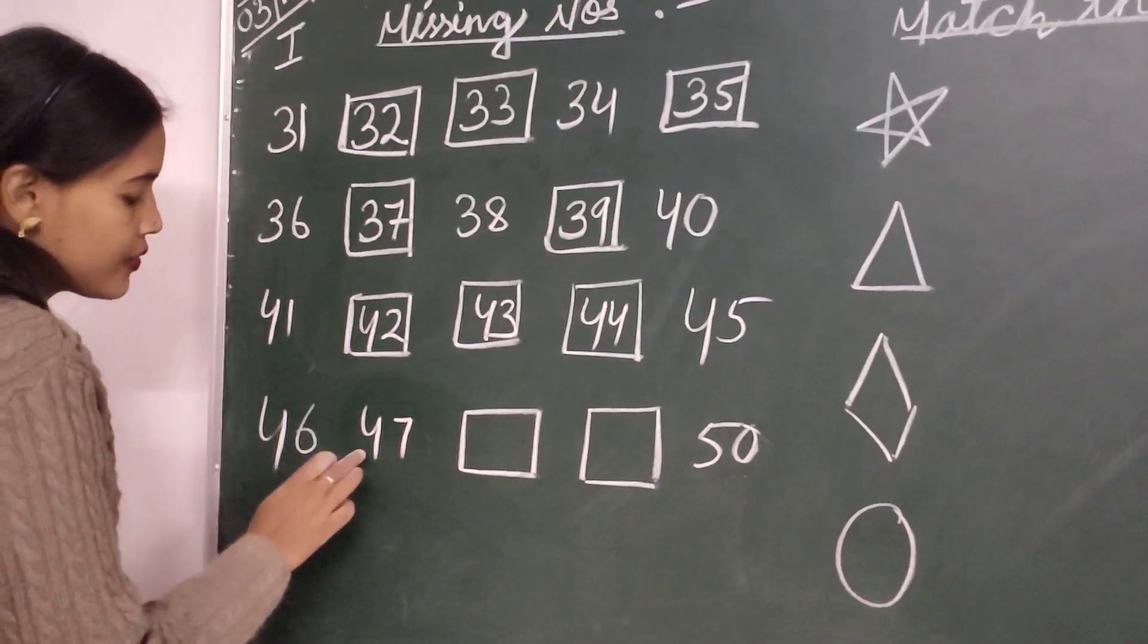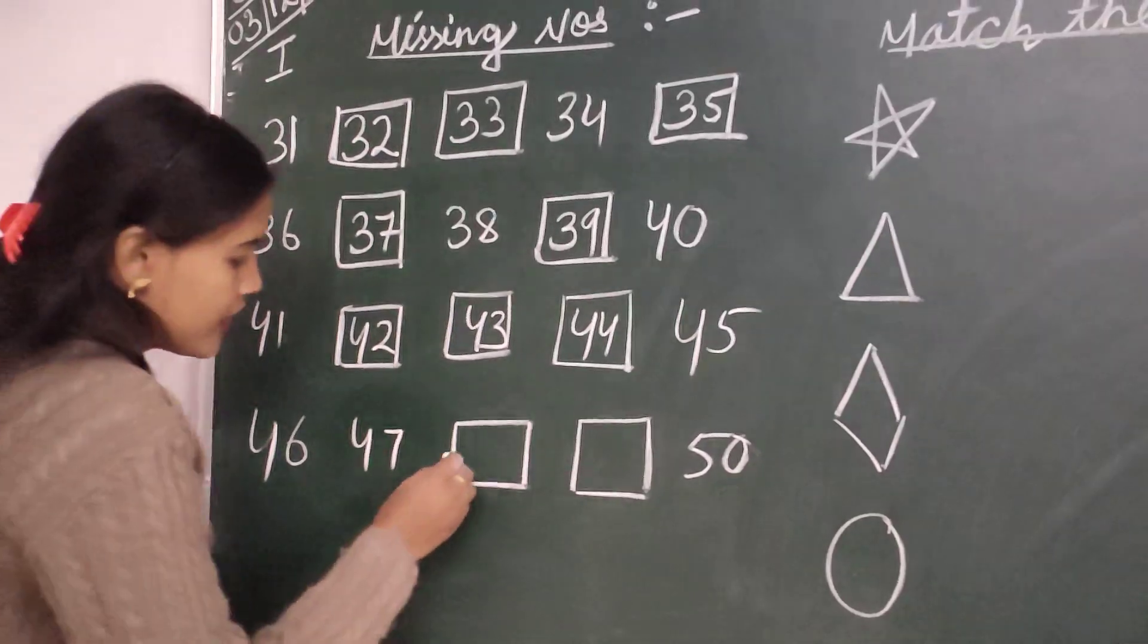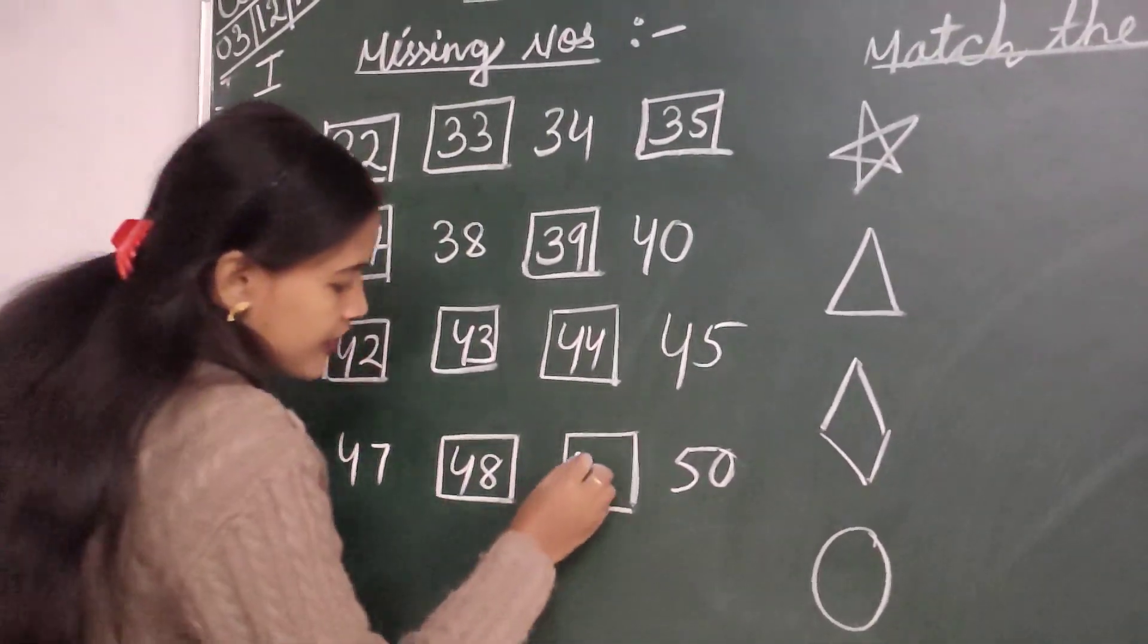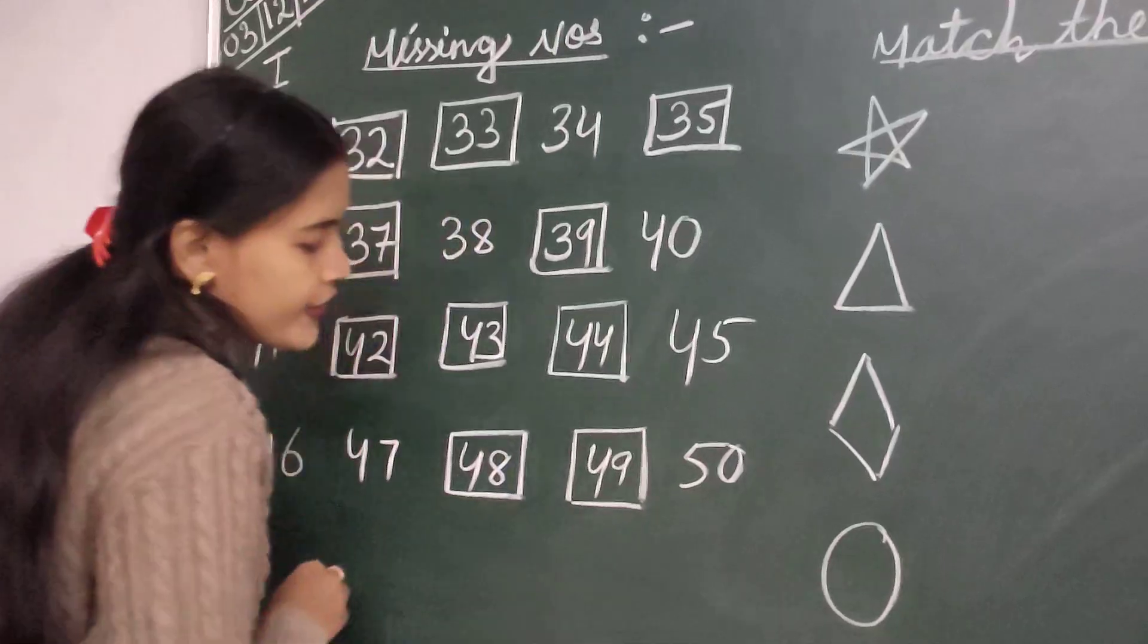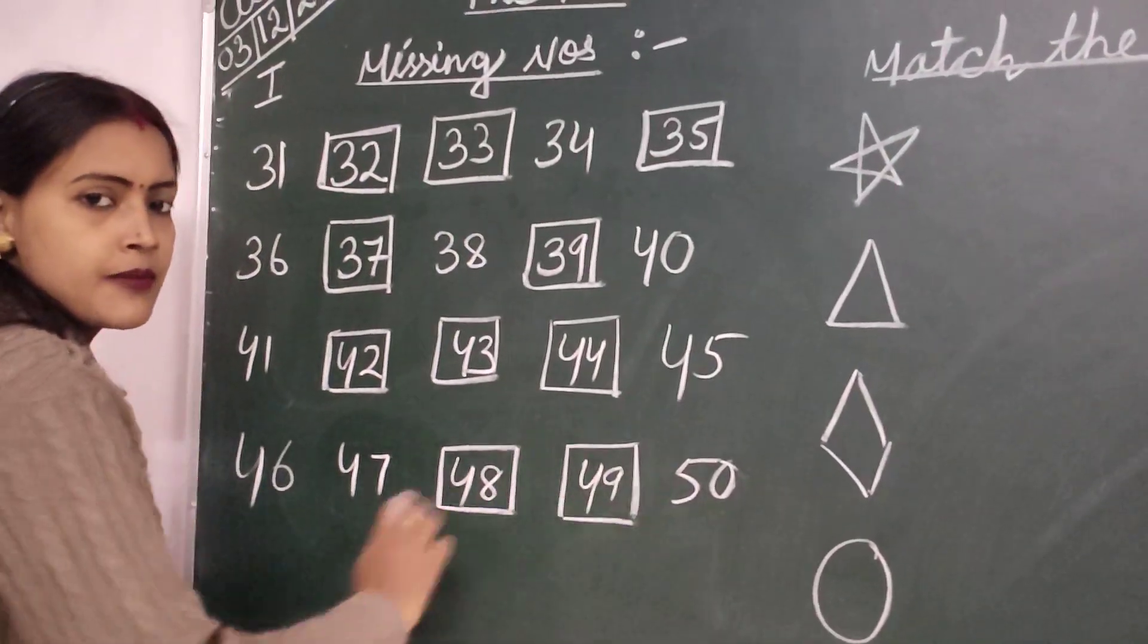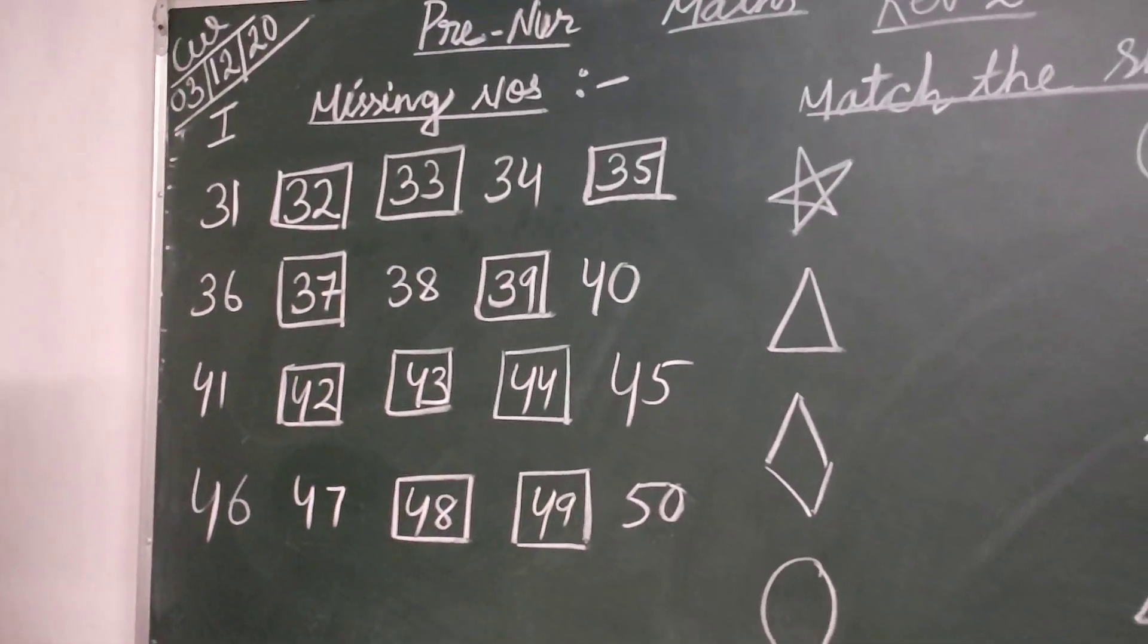Then 46, 47, 48, 49. The last number is 50, 50.